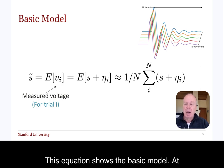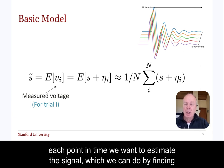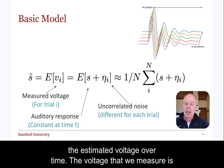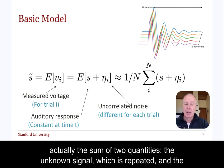This equation shows the basic model. At each point in time, we want to estimate the signal, which we can do by finding the estimated voltage over time. The voltage that we measure is actually the sum of two quantities: the unknown signal, which is repeated, and the random and thus unknown noise.